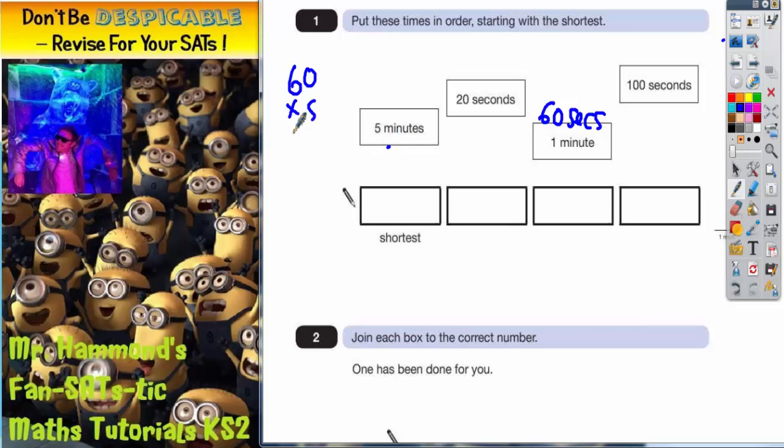Quick column method at the side in case you can't do it in your head. Five nothings are still nothing, five 60s are 30, so five lots of 60 is 300. You could also say five 60s are 30 but put the zero on the end, so it's 300 seconds. Now they're all in seconds, easy to compare.